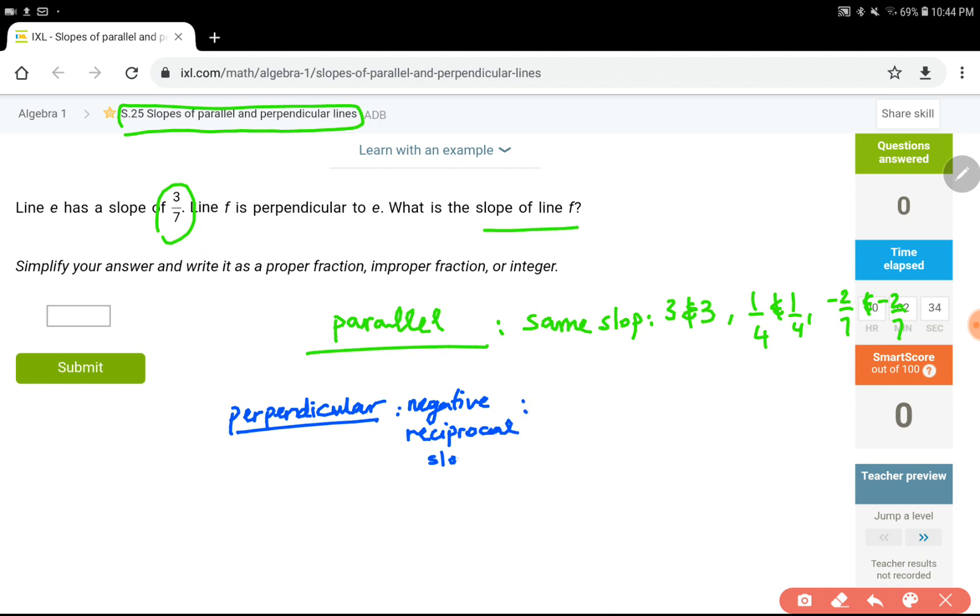Negative reciprocal slopes means if one slope is positive 2, the other one is going to be opposite reciprocal. Change the sign and flip that 2 over 1 and end up with 1 over 2. Because 2 and 2 over 1 is the same. Another example is negative 3 over 5 and positive 5 over 3. Another example is negative 1 and positive 1, because this one is negative 1 over 1 and when you flip that, you end up with 1 over 1 still. So these are our examples.